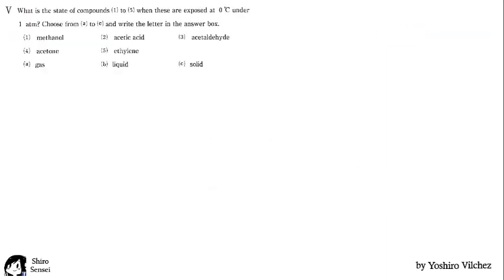Problem 5 says, what is the state of compounds 1 to 5 when these are exposed at 0 degrees Celsius under 1 atmosphere? So the topic here is the physical properties of organic compounds. For each substance we should know the melting point and the boiling point in Celsius degrees of every representative compound of each functional group, and with this information we can determine in which state they are at 0 degrees Celsius.